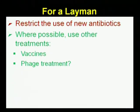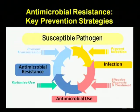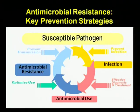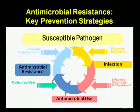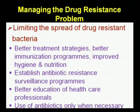We should also restrict and minimize the use of new antibiotics, and where possible increase vaccination and phage therapy or prophylaxis. Key factors to prevent antimicrobial resistance include: preventing infections in the first place, effective diagnosis and treatment, optimal use of antimicrobials, and preventing the transmission of pathogens from one individual to another.